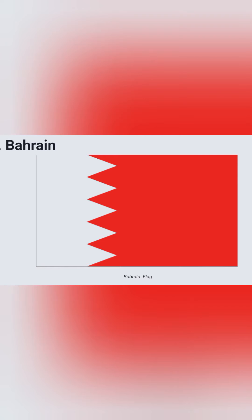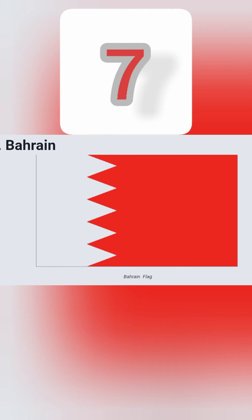Number 7: this is the flag of Bahrain. It is having a red color and some part of it contains white color. It is having five triangles, served as a saw-tooth pattern. These five triangles represent the five pillars of Islam.